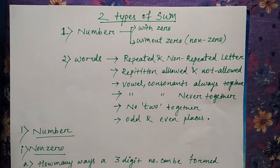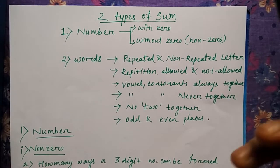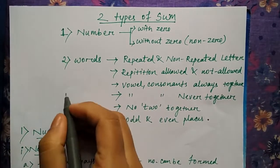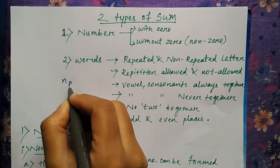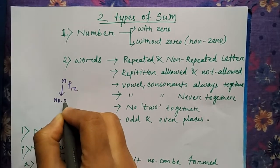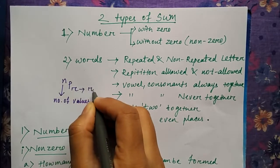Hello students, in this lecture we'll see problems on permutation. In the last class, I told you the formula of permutation. If you remember, the formula is NPR, where N is the number of values given and R is the arrangement.